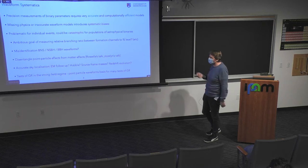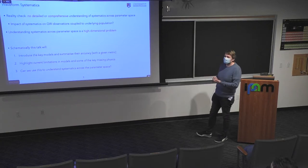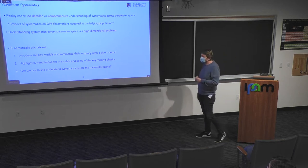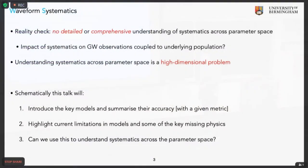You need to understand these systematics before you can make any statements about the validity of general relativity. A reality check: I feel there is no detailed or comprehensive understanding of systematics across the parameter space, especially with the current generation model where we've included more physics than before. The impact of systematics on gravitational wave observations is implicitly coupled to the underlying population. If we happen to observe binary black holes that are essentially equal mass and not spinning, this is something we can model extremely well.